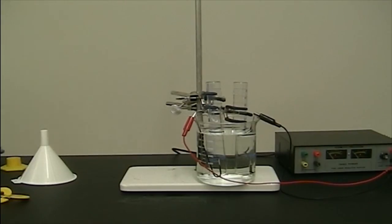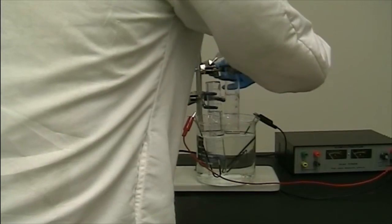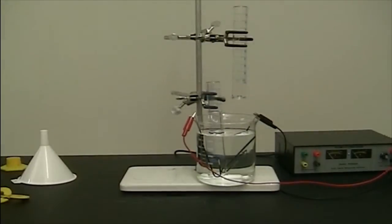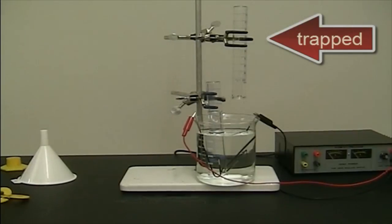This was accomplished first by unplugging the power supply box. Then, using the three-prong clamp, we raised the graduated cylinder that presumably contained hydrogen up and out of the beaker. Because hydrogen is less dense than air, the pocket of hydrogen produced remained trapped in the graduated cylinder.